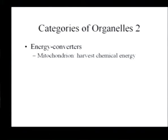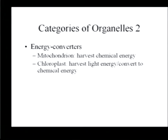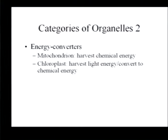The endomembrane system is a major trafficking system in the cell. There are two major types of energy converters: the mitochondrion, present in essentially all eukaryotic cells, harvests chemical energy from carbon chains. The chloroplast, found in plant cells and some protist cells, harvests light energy and converts it to chemical energy that can then be used for other cellular processes.